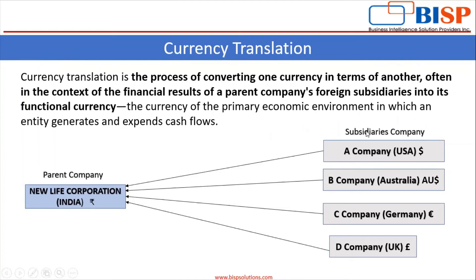In the given picture, you can see that New Life Corporation is the parent company. It has four subsidiaries: A company from USA, B company from Australia, C company from Germany, and D company from UK. You have to convert all the transaction amounts to INR for reporting purposes. For creating consolidated financial statements, we have to convert the transaction amount into the parent company's currency.